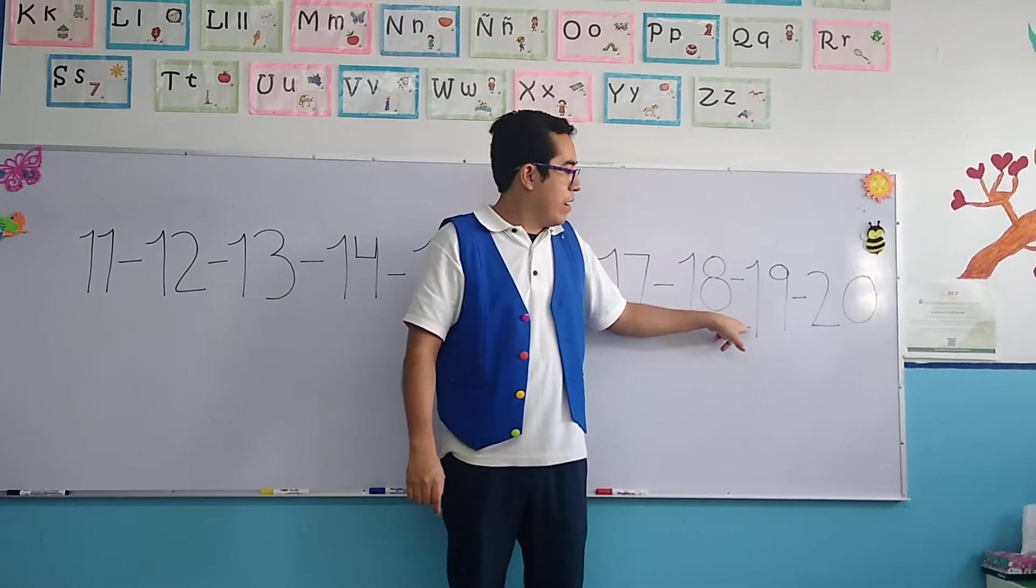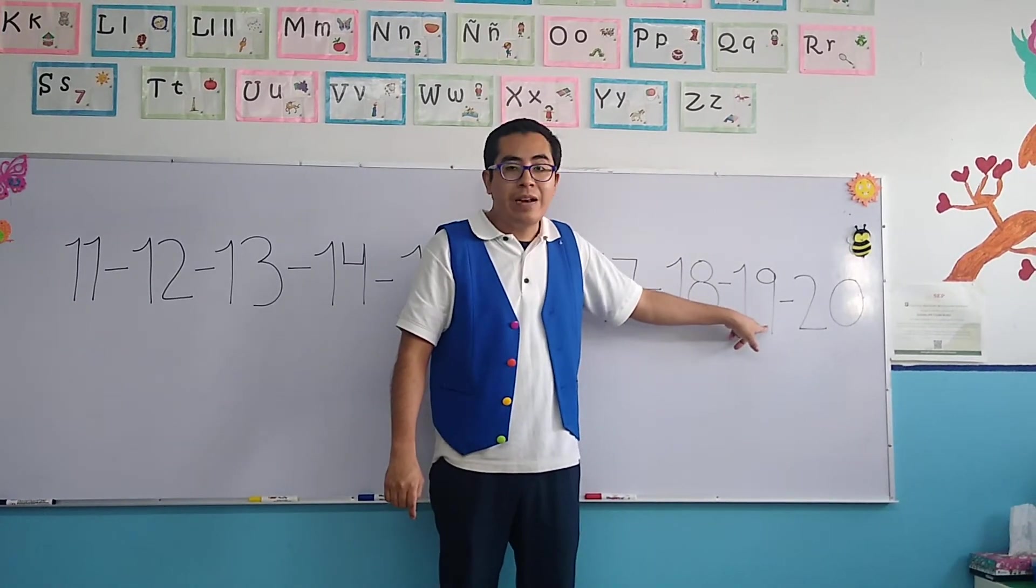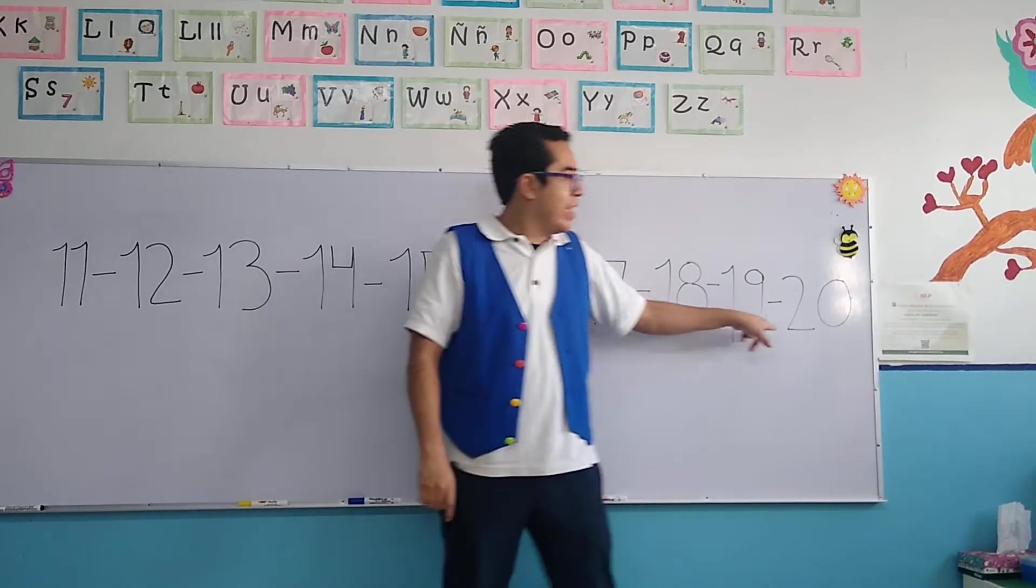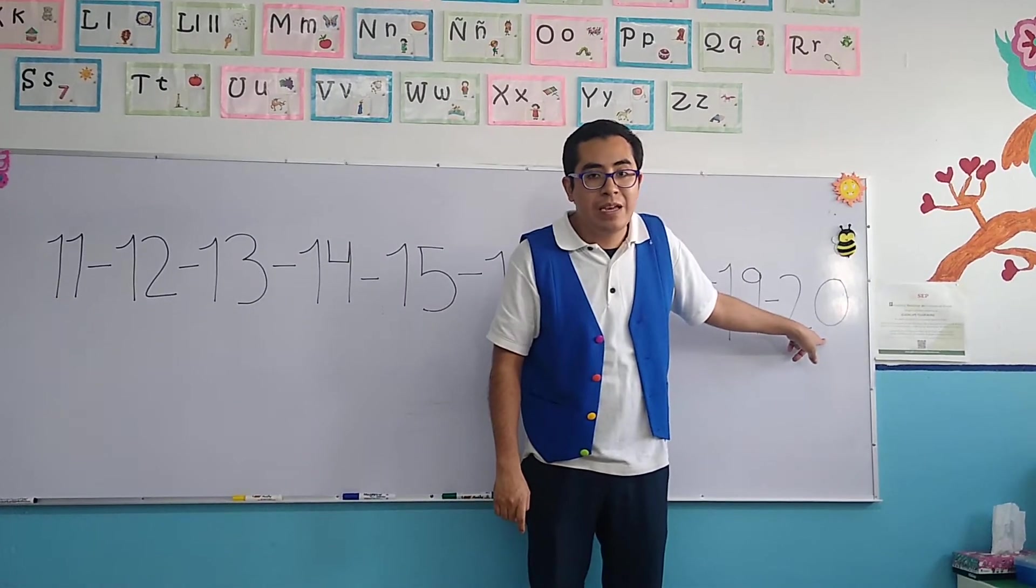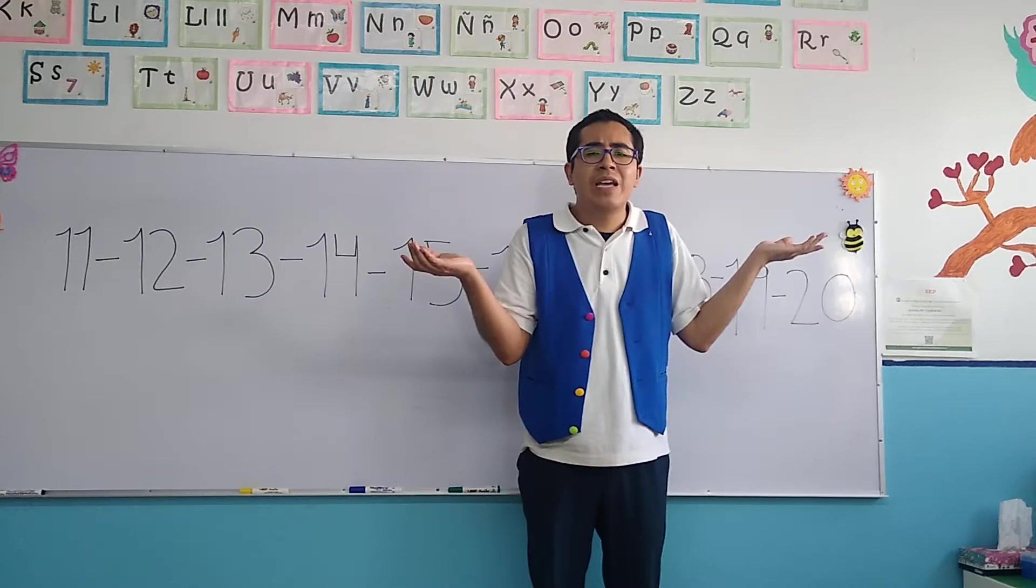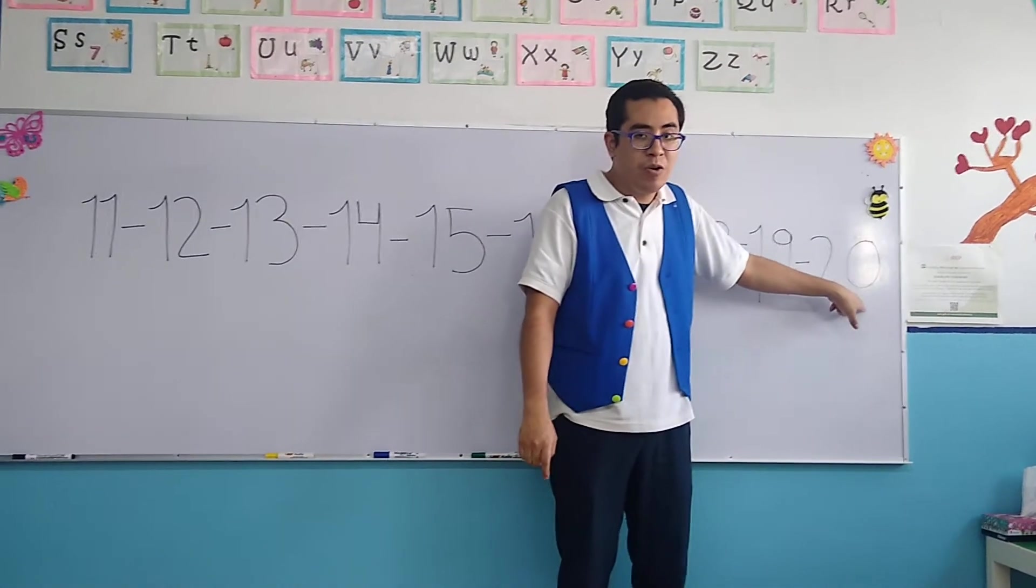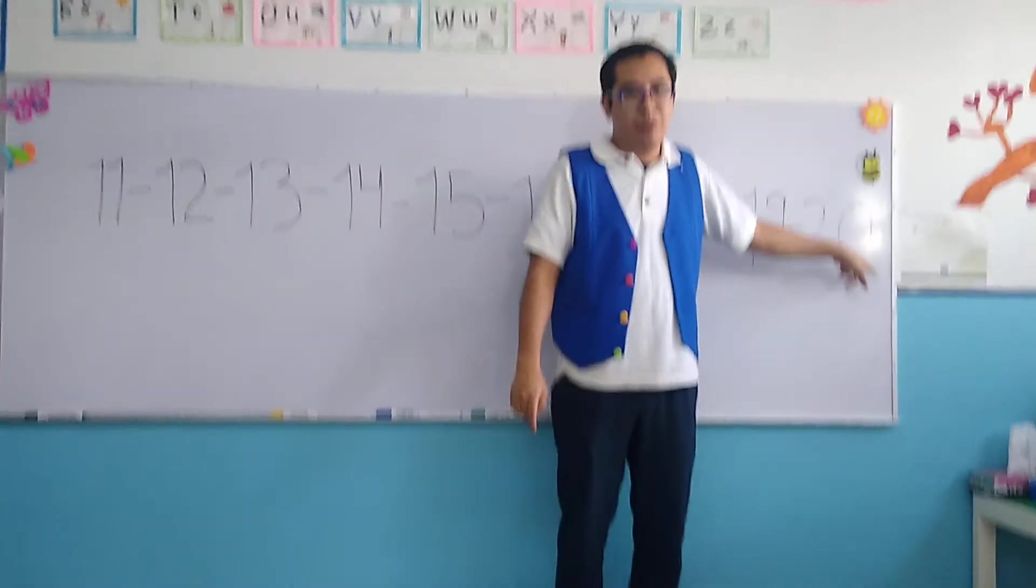The next number, number 1 and number 9, 19. And the last number of today, the number 20. How can I put number 20? We require a 2 and a 0 for number 20.